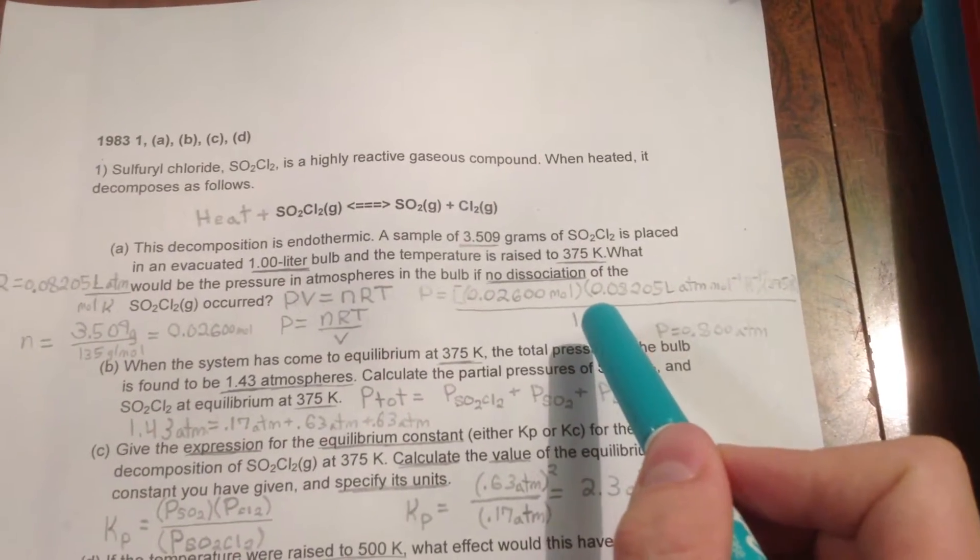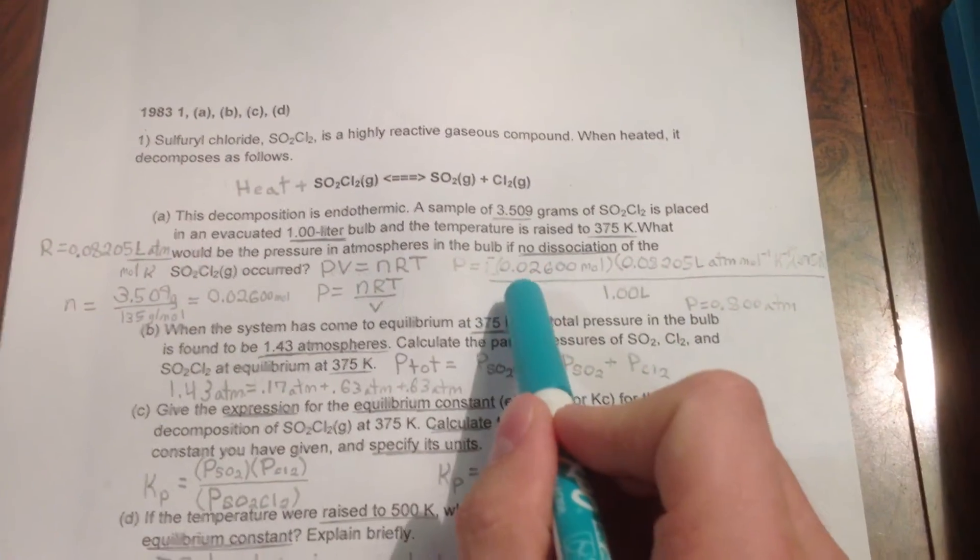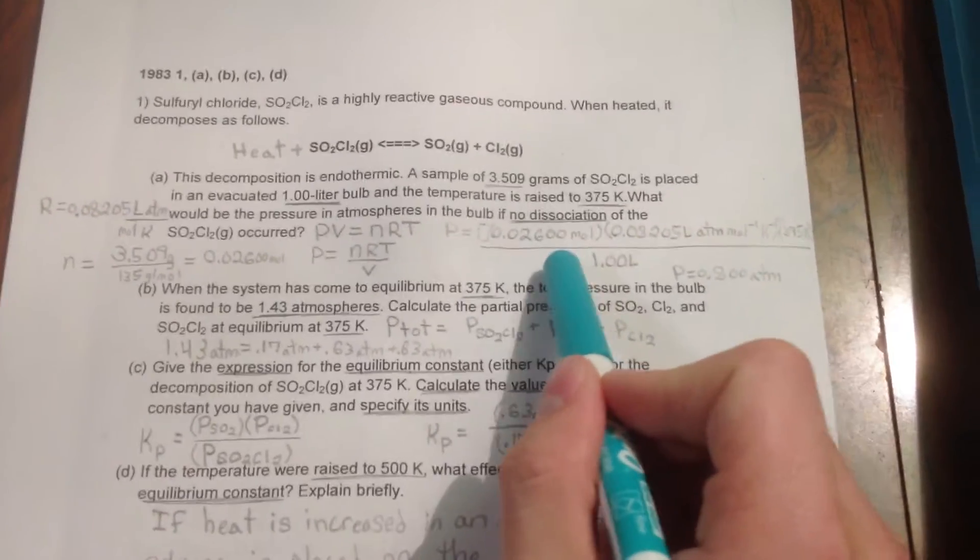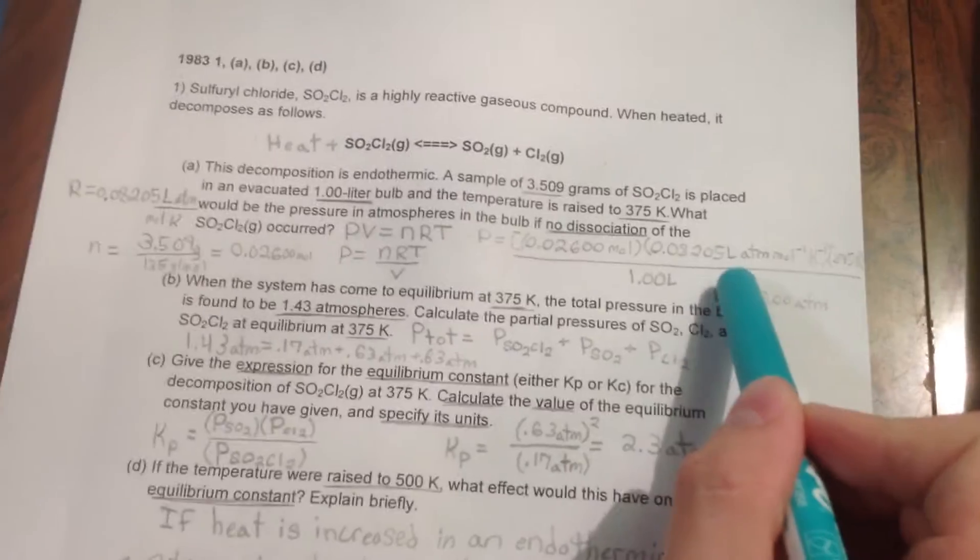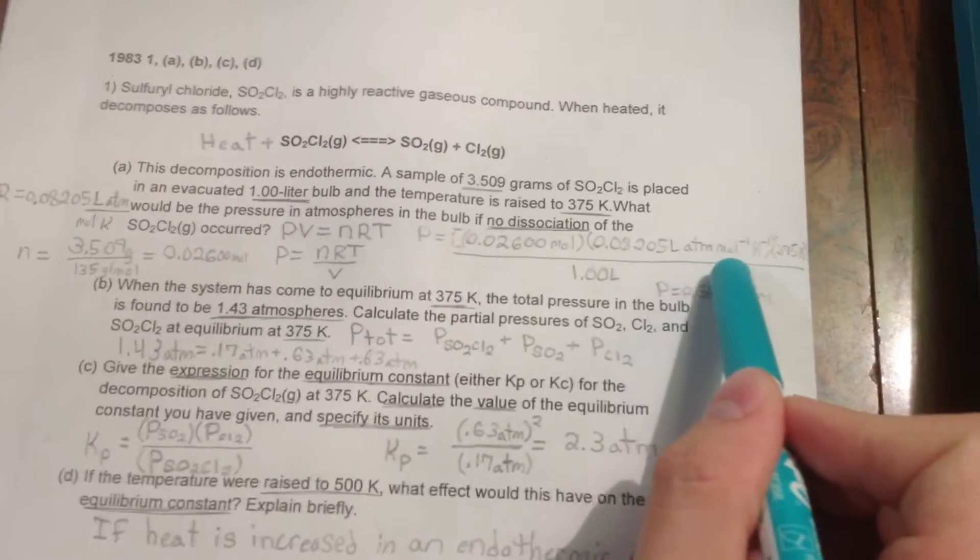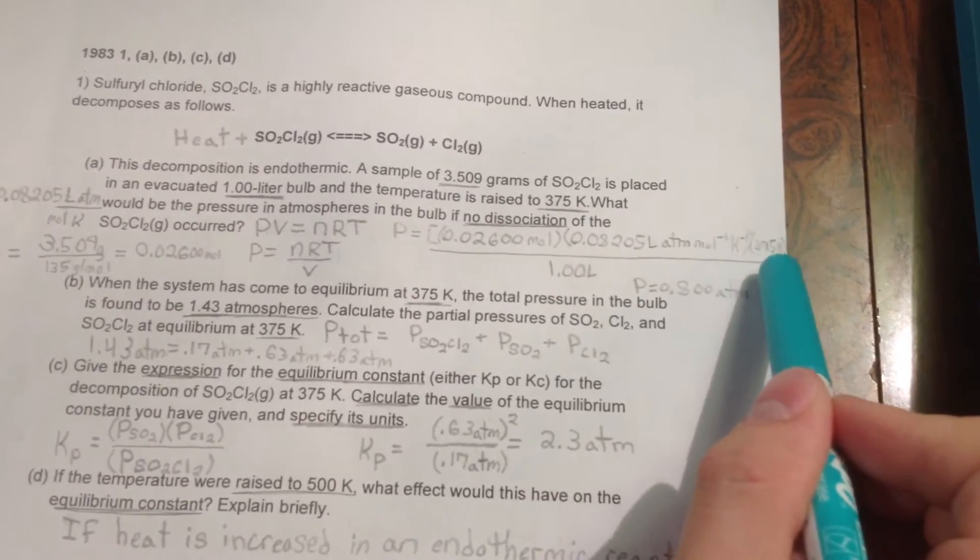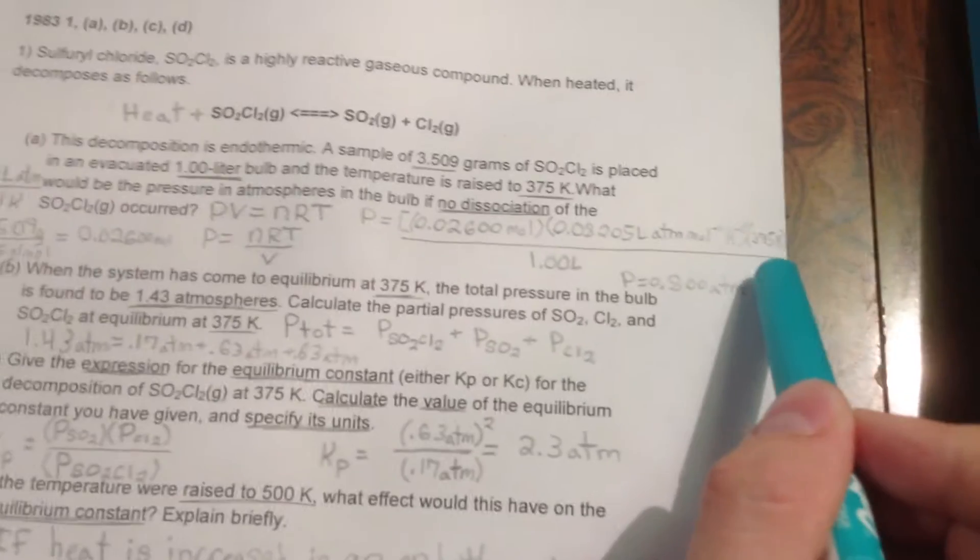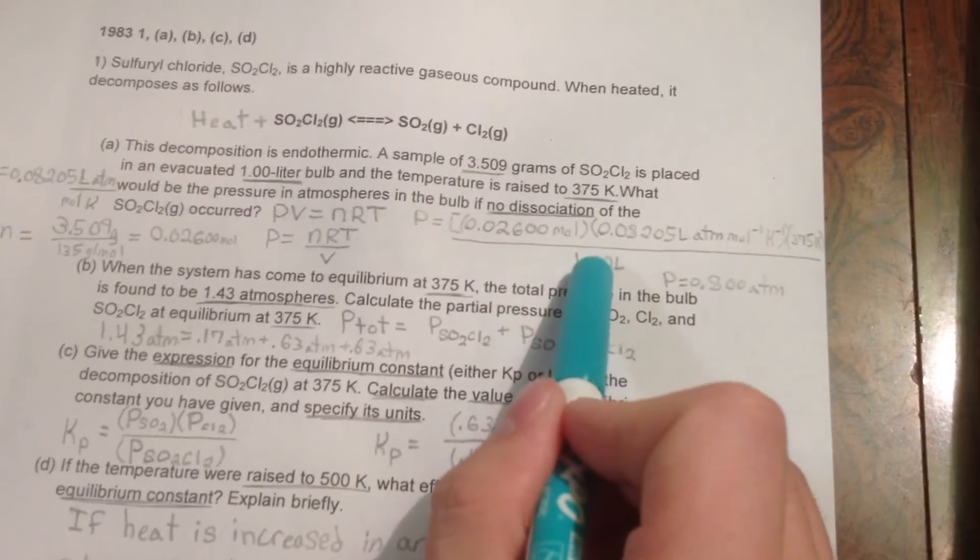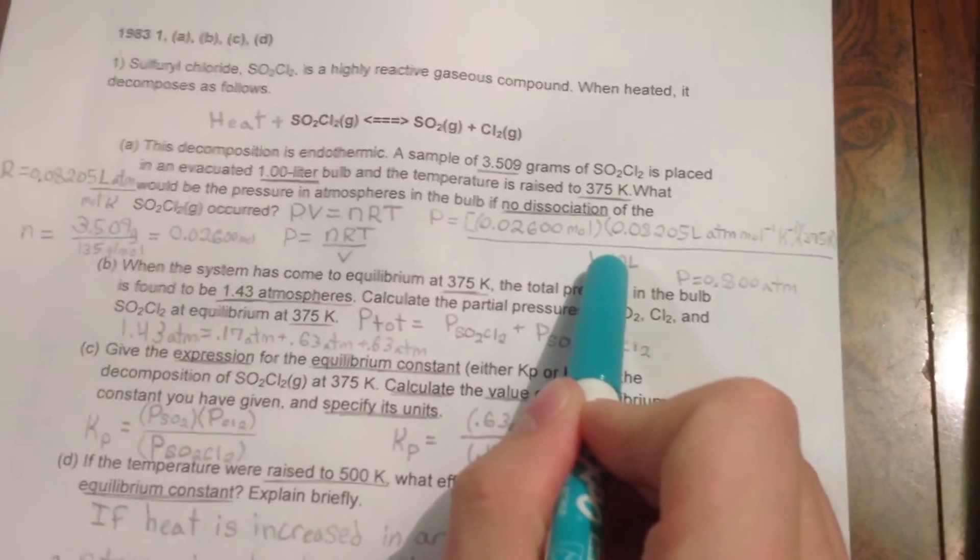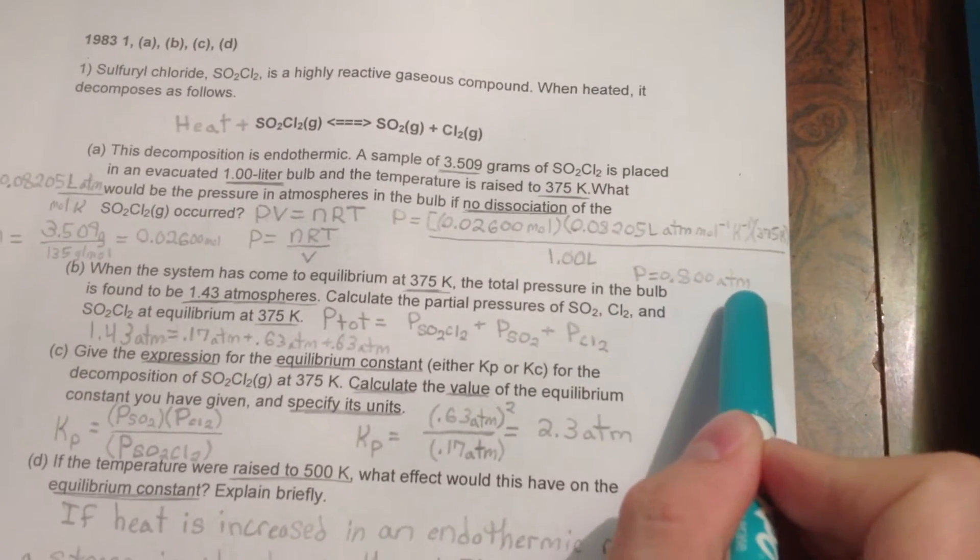P equals 0.026 moles times 0.08205 liters atmospheres over moles Kelvin, multiplied by 375 degrees Kelvin, all divided by 1 liter. Do the math and come up with pressure is equal to 0.8 atmospheres.